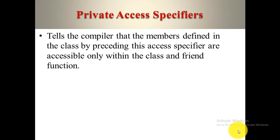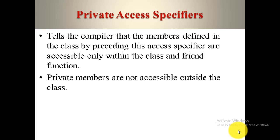So what is the private access specifier? The private access specifier tells the compiler that members defined in the class with this specifier are accessible only within the class and in friend functions. Private members are not accessible outside the class — we cannot access them outside the class, and it will generate an error.